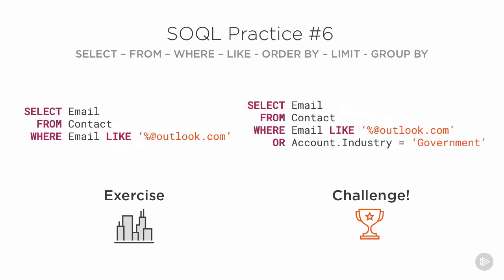Answers to question six. This question tests your knowledge of using the fuzzy matching LIKE keyword in SOQL. For the exercise, you needed to have the wildcard character before the @outlook.com portion — no need for a wildcard after it. The challenge just makes sure you understand that you can also use cross-object filters with your LIKE filter. It's also a subtle dig at government agencies who are behind with their technology. Ha!